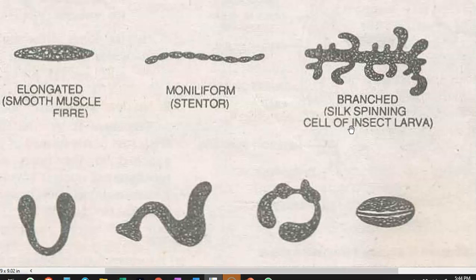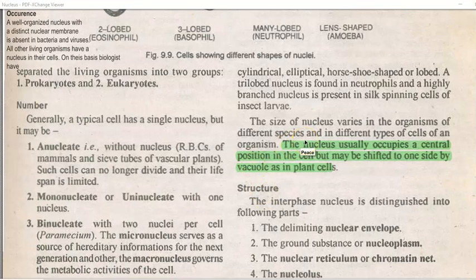Branched nuclei can also be found in living cells — for example, silk-spinning insect larval cells are found to have highly branched nuclei as shown in the image. The size of the nucleus varies with the organism, different species, and depending upon the types of cells in an organism. The nucleus usually occupies a central position in the cell, but may be shifted to one side when structures such as a vacuole are present, especially in plant cells.